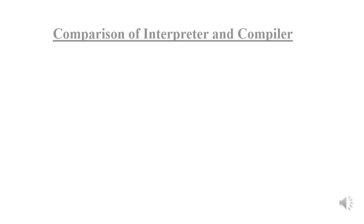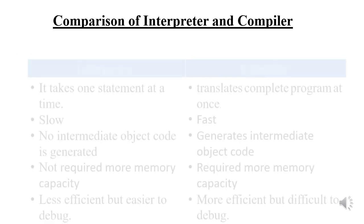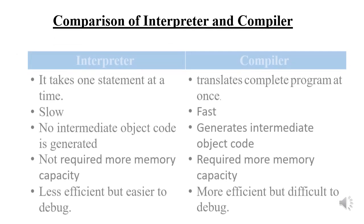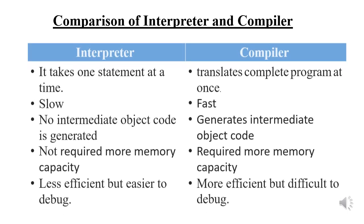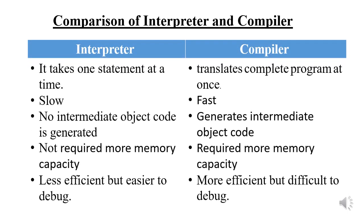Now let's see why two software are used to accomplish the same task. An interpreter translates one line at a time, while a compiler examines the entire program and translates it into machine language at once. This is why the compiler is faster than the interpreter.